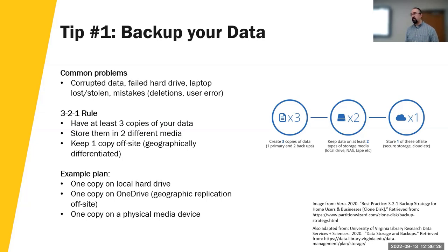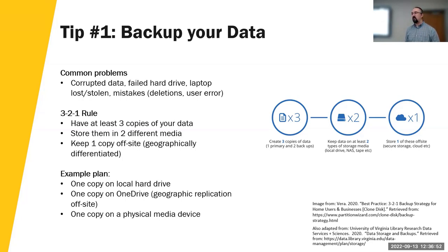OneDrive and all cloud systems — Dropbox, Google Drive, all that kind of stuff — if it works for you, that does geographic replication automatically, so you don't have to worry about that. If your computer exploded, there is another copy out there on the cloud. It never hurts to have another copy on a physical media device. Backup hard drives, USB drives — these days they last for quite a long time. So if you just remember 3-2-1, that's a pretty good way to make sure you're backed up.